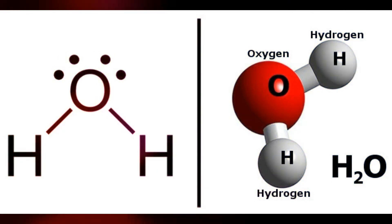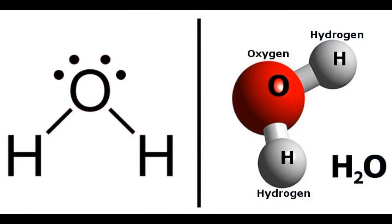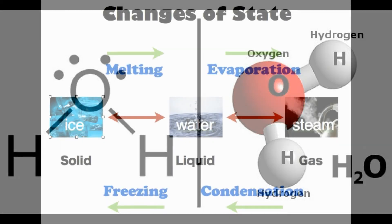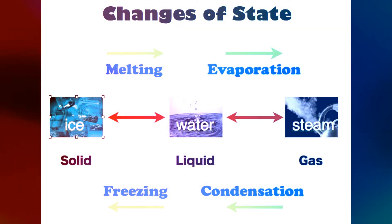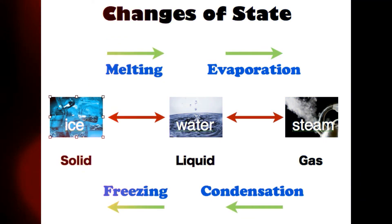You can change matter from one state to another through heat. Heat is responsible for changing the state of matter. There are four ways that heat can do this: melting, freezing, condensation, and evaporation.